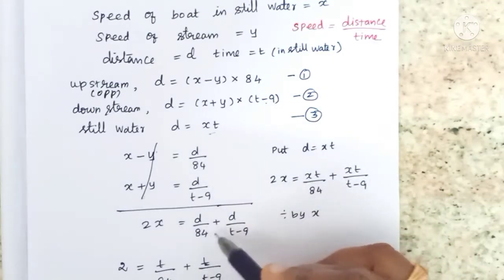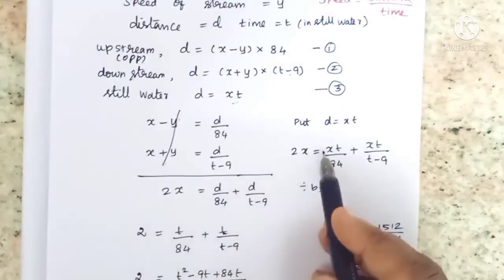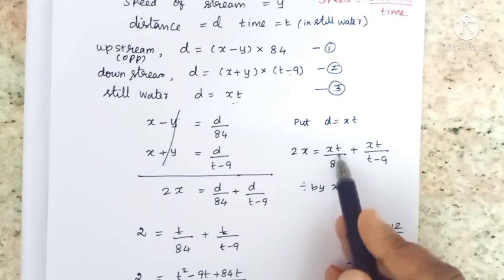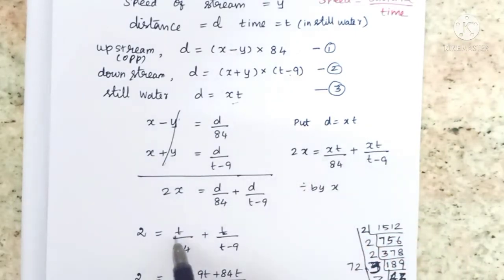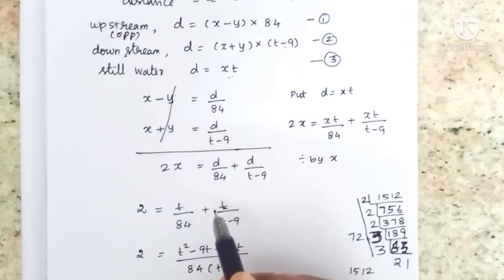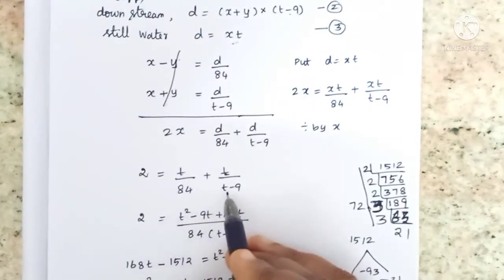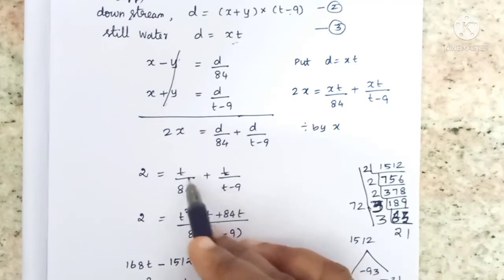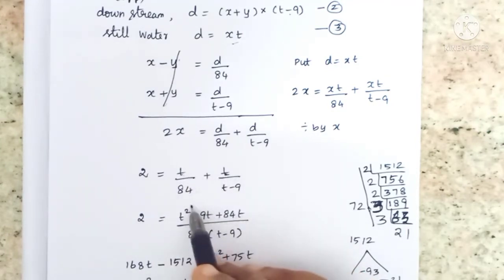2x equals xt by 84 plus xt by t minus 9. Canceling x from both sides, 2 equals t by 84 plus t by t minus 9.